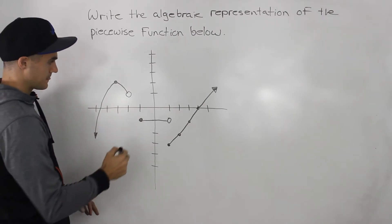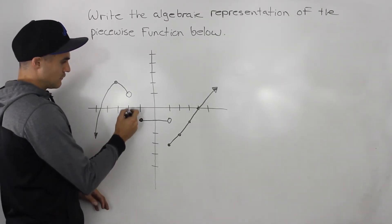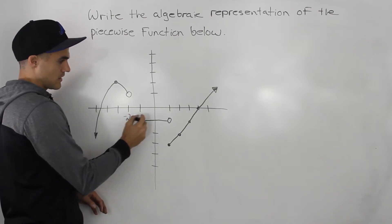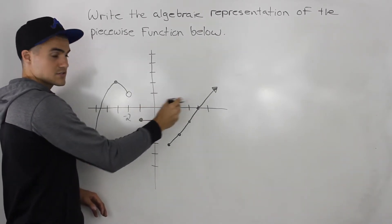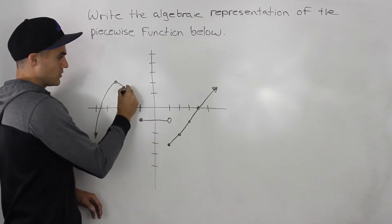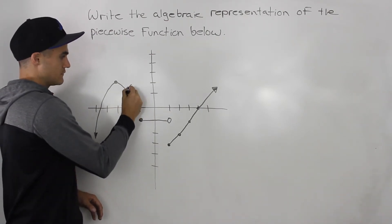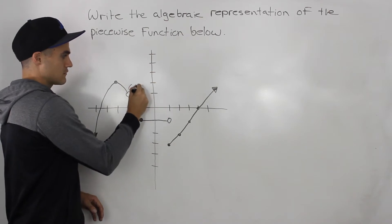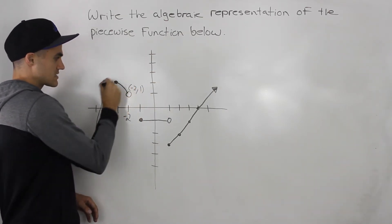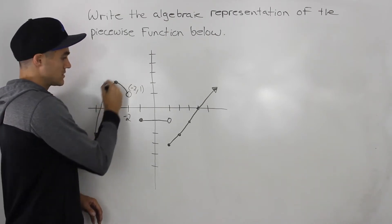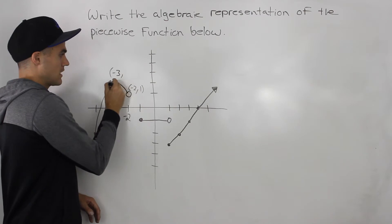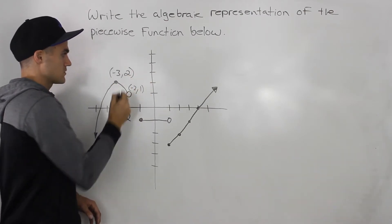Notice how this leg is defined for x values that are less than negative two. All of these x and y values — this scale is going up by ones. So this point here is negative two and positive one. And then this point here, which is the vertex — notice how this is a parabola. The vertex of this parabola is going to be at negative three and positive two.